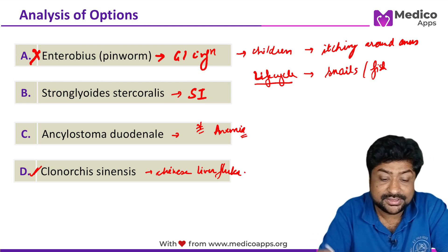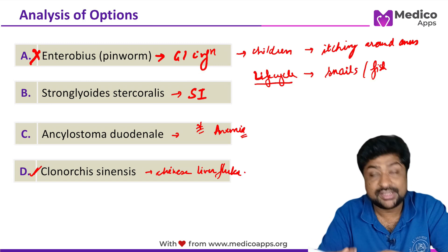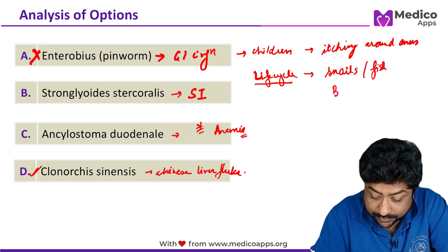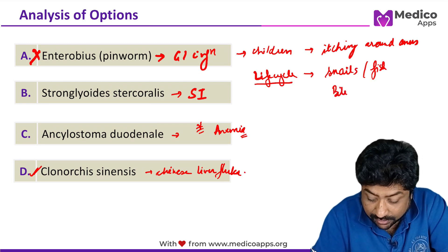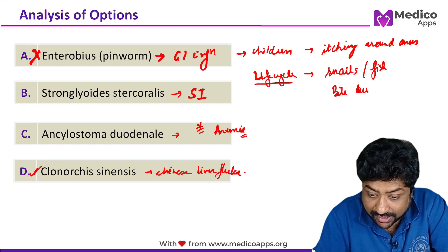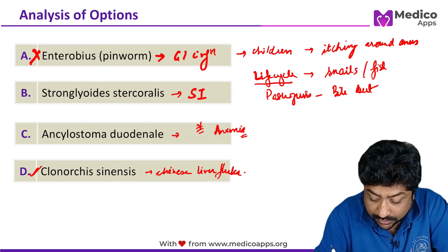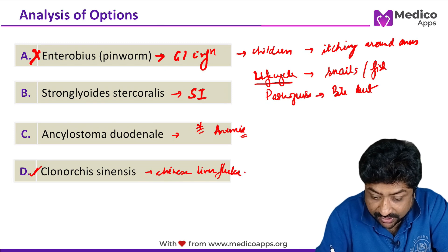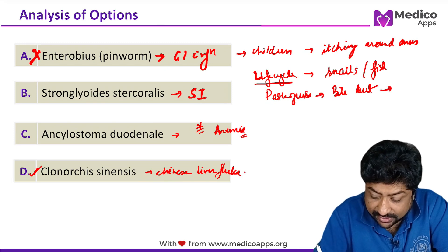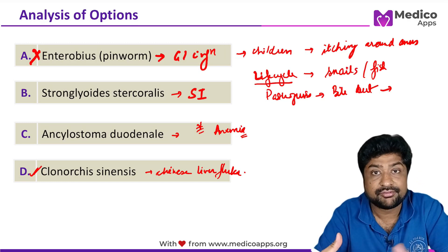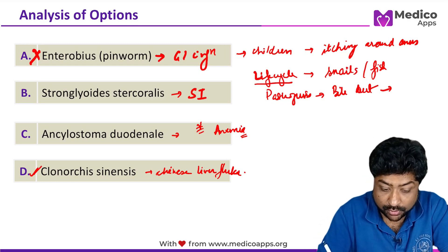Once ingested, the larva will migrate to the bile duct. That is where it causes inflammation and infection — this is the key pathogenesis of Clonorchis sinensis.